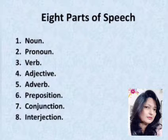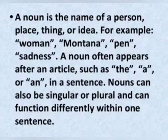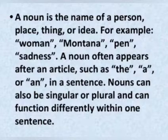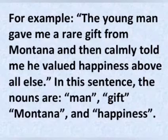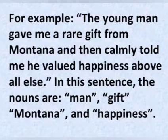Noun. A noun is the name of a person, place, thing, or idea. For example: woman, Montana, pen, sadness. A noun often appears after an article such as 'the,' 'a,' or 'an' in a sentence. Nouns can also be singular or plural and can function differently within one sentence. For example: 'The young man gave me a rare gift from Montana and then calmly told me he valued happiness above all else.' In this sentence, the nouns are man, gift, Montana, and happiness.